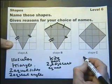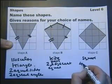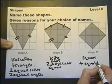This is a square. Why? Because it's got four equal sides and four 90 degree angles.